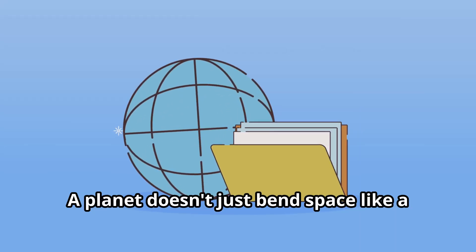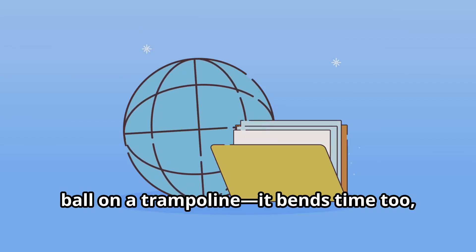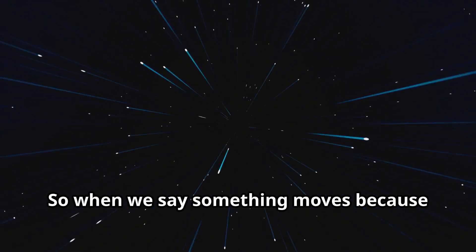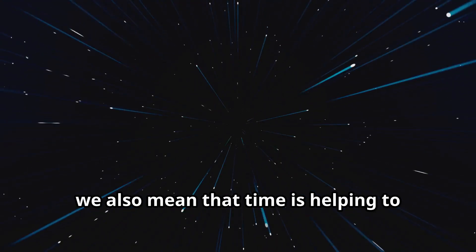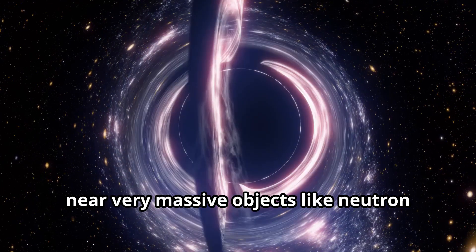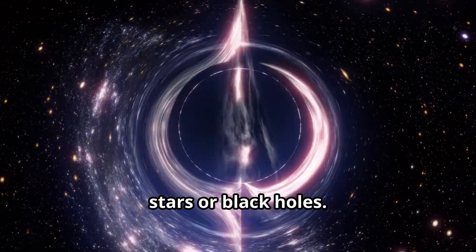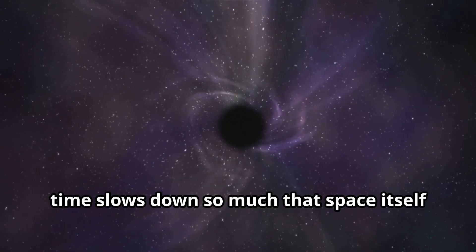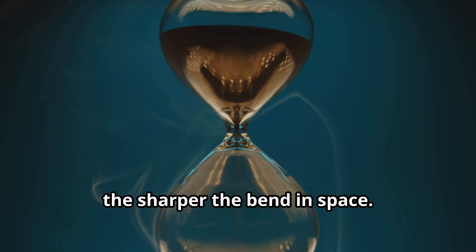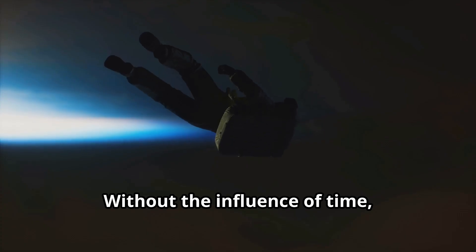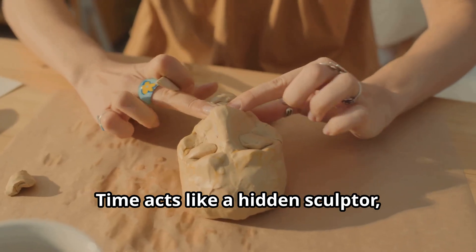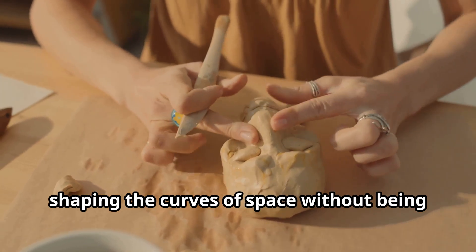This connection explains why space around Earth is bent, even though we often focus on time. The two are part of the same thing, space-time. A planet doesn't just bend space like a ball on a trampoline, it bends time too. And the bending of time strengthens the bending of space, they reinforce each other. So when we say something moves because space is curved, we also mean that time is helping to curve that space. This relationship becomes even more clear near very massive objects like neutron stars or black holes. In those places, time slows down so much that space itself gets pulled into steep curves.